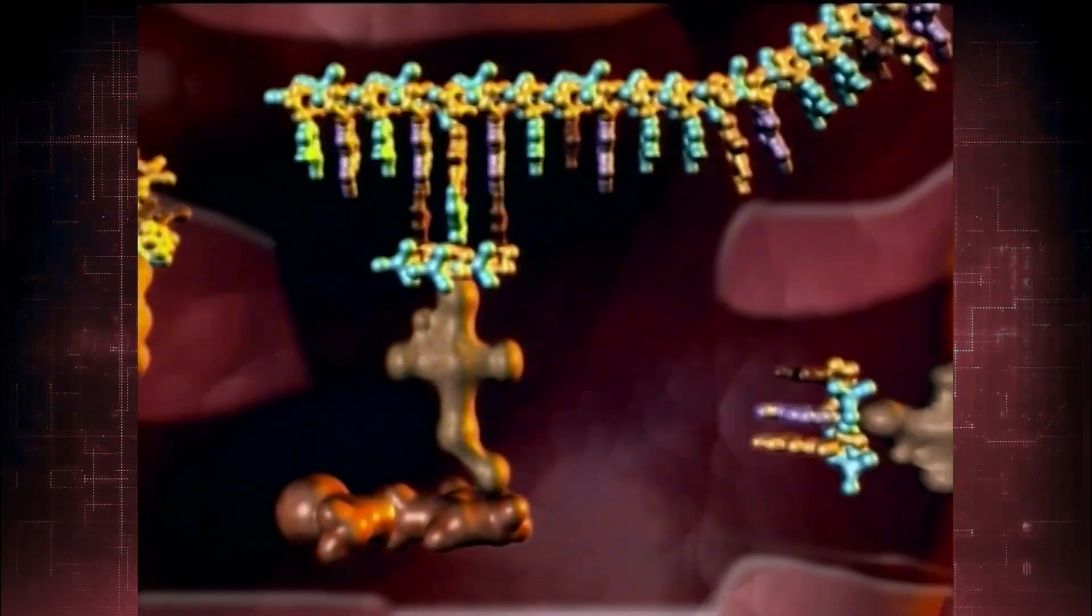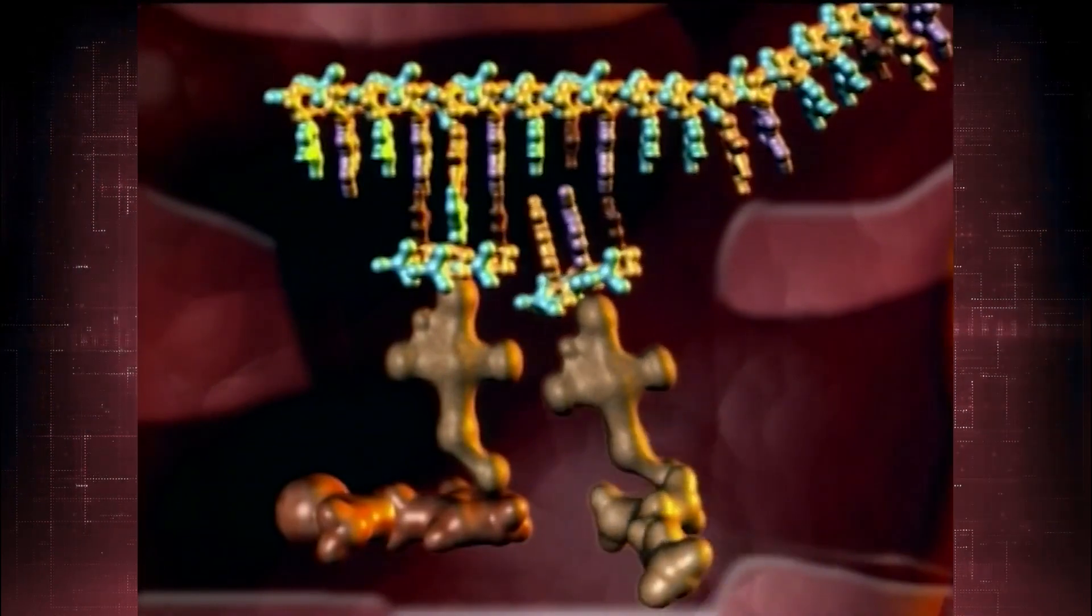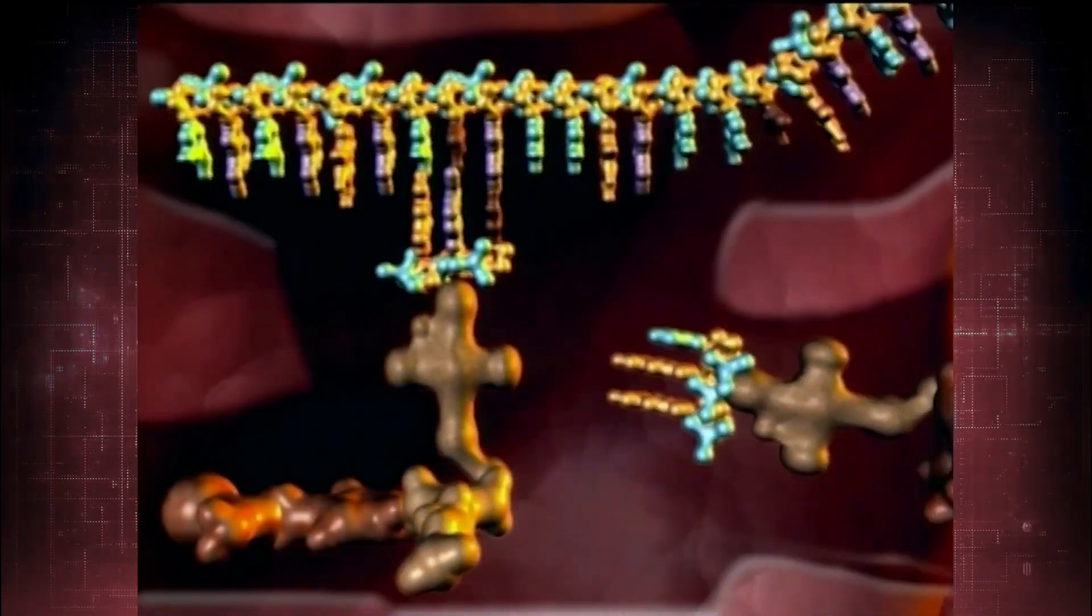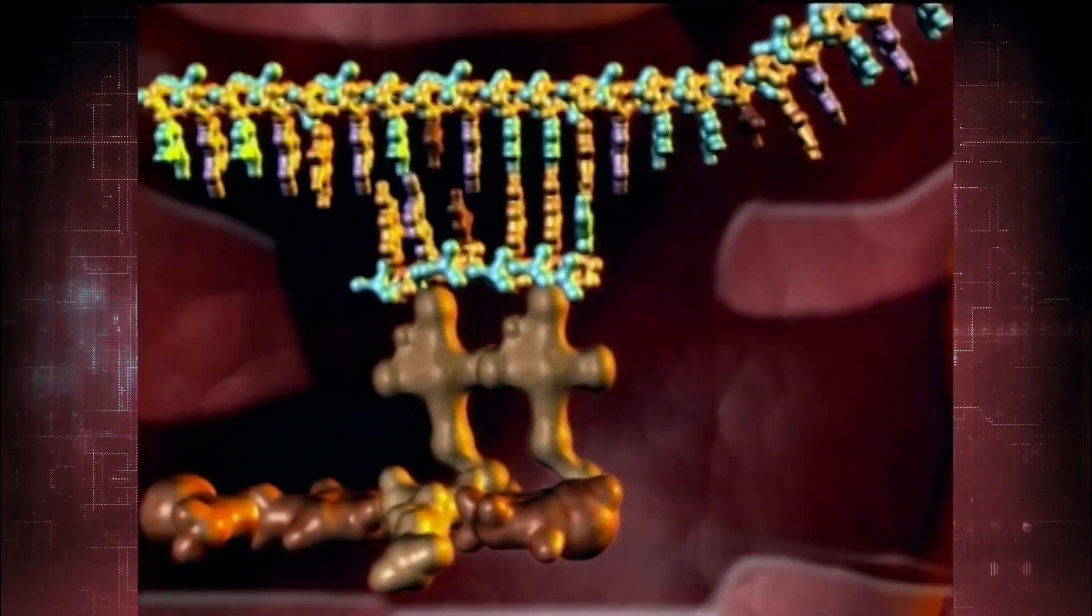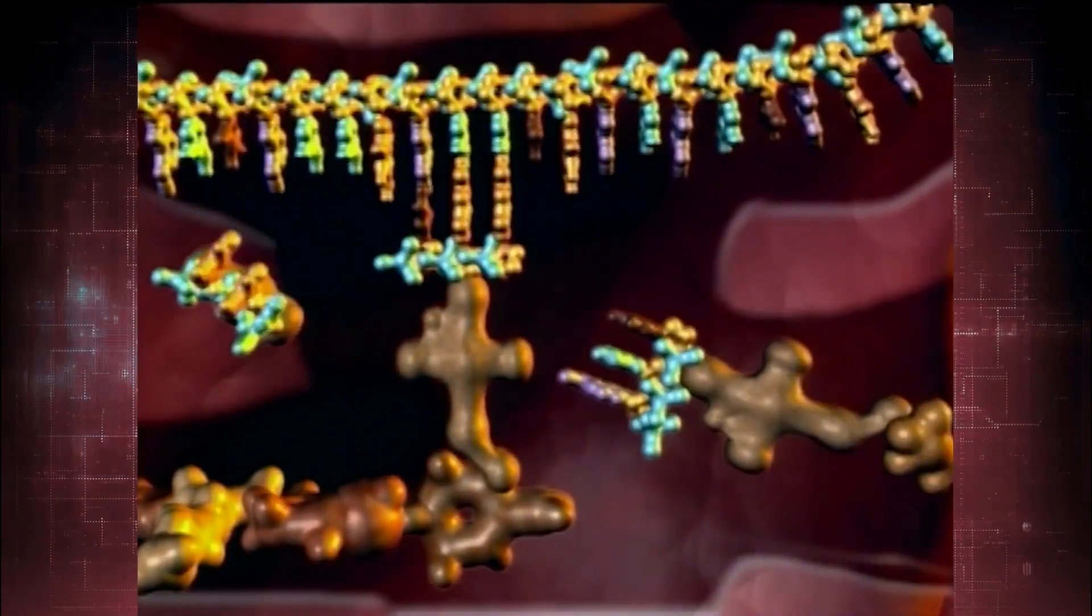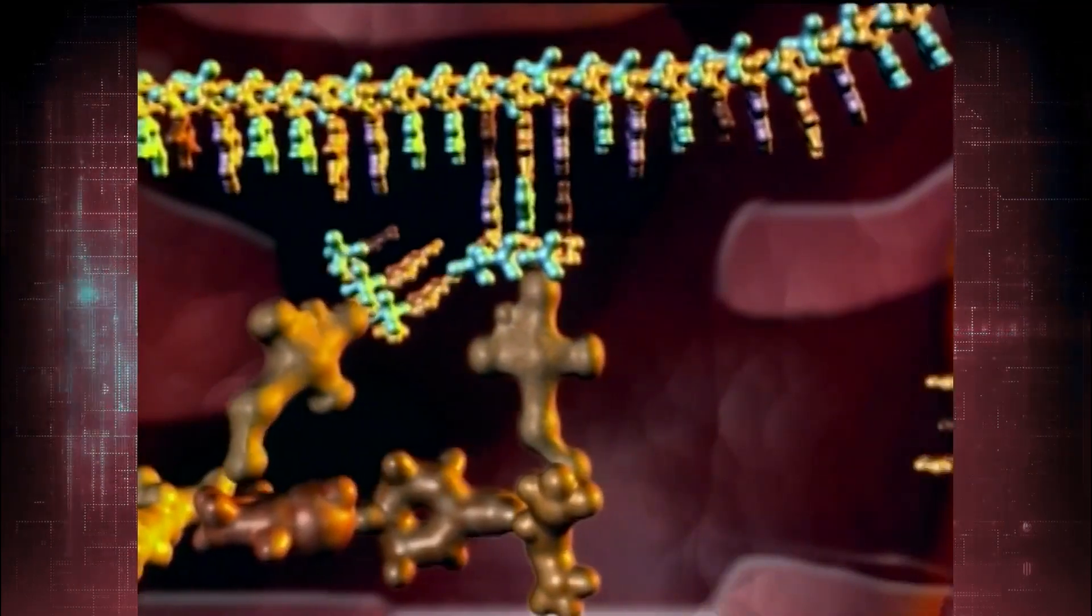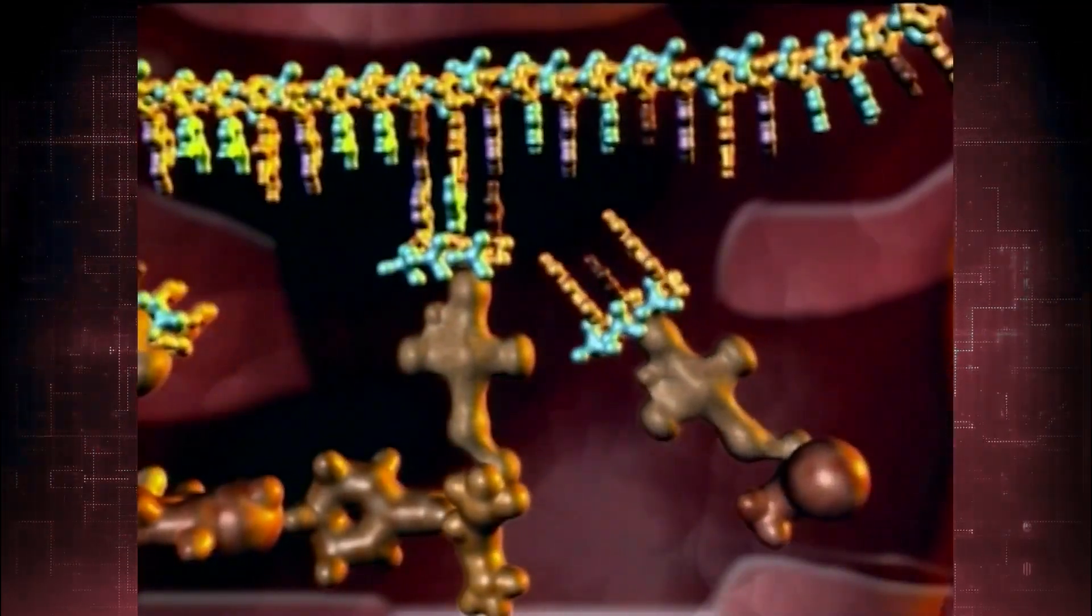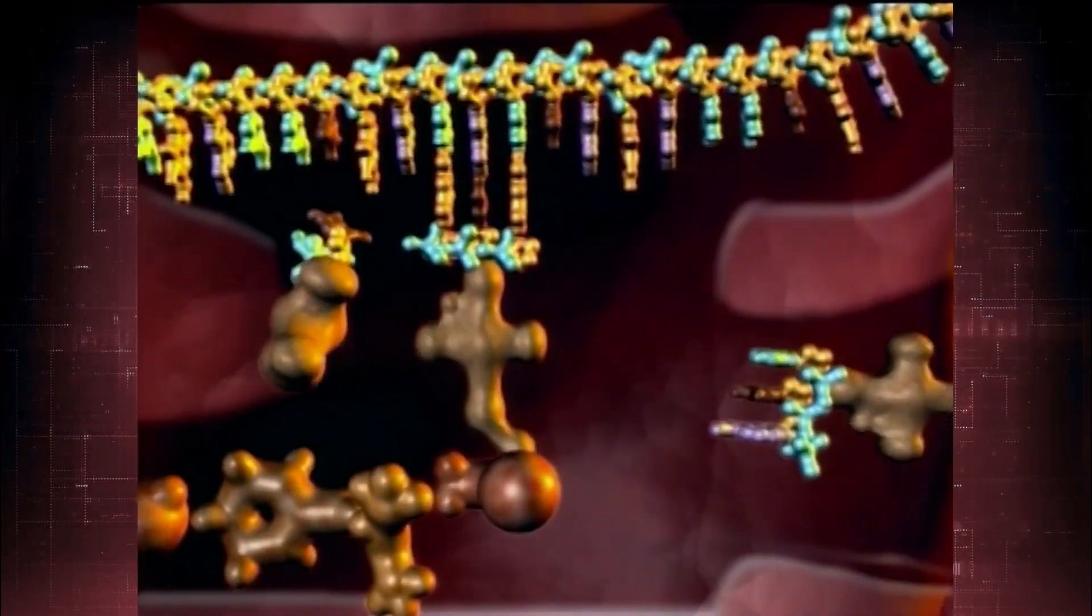Inside the ribosome, a molecular assembly line builds a specifically sequenced chain of amino acids. These amino acids are transported from other parts of the cell and then linked into chains often hundreds of units long. Their sequential arrangement determines the type of protein manufactured.